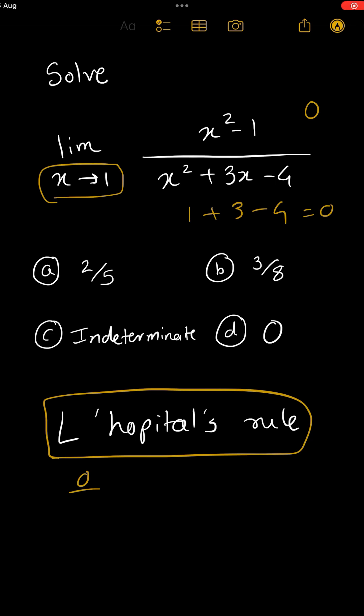So if you are getting zero by zero or infinity by infinity after doing this, then only you can use this rule.